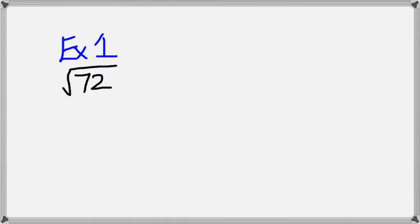Let's say we want to simplify square root of 72. What we need to do is look for a number that's going to be a multiplying factor of 72, which is a perfect square. In this case, it would actually be 36 times 2.